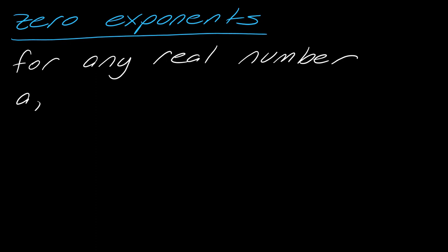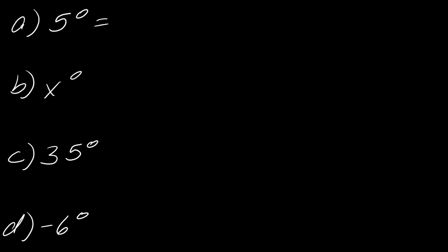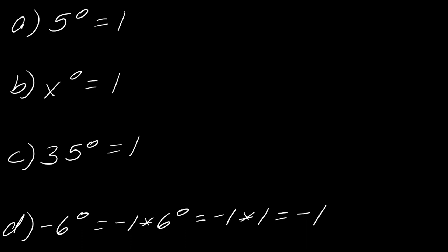One other note about zero exponents: for any real number a, we have the property that anything to the zero power — a to the zero — always equals 1. So 5 to the zero equals 1, x to the zero equals 1, and even 35 to the zero still equals 1. Now what about negative 6 to the zero without parentheses? This is going to be negative 1, because technically this goes back to the negative 1 property: you've got negative 1 times 6 to the zero. Six to the zero is 1, so this whole thing actually equals negative 1.